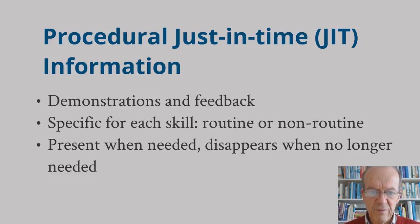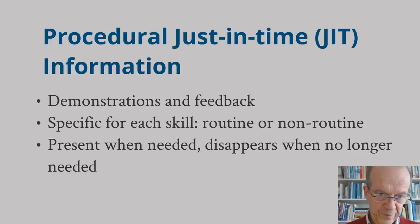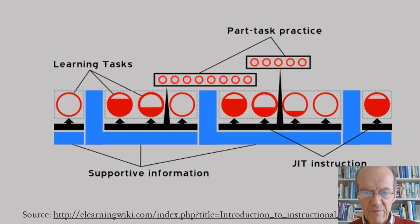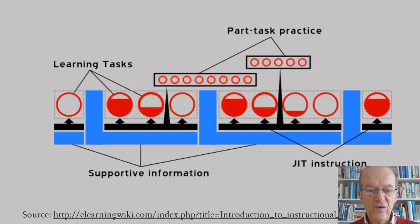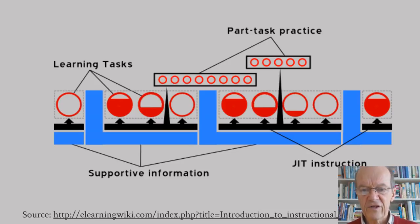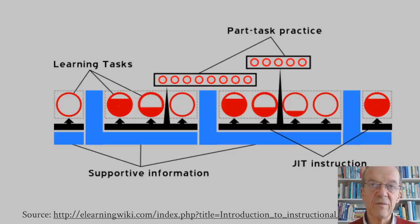Just-in-time procedural information is present when needed and disappears when no longer needed — that's the JIT principle. With these four components, instructional sequences can be arranged in which all components have a place. The different learning tasks are each provided with a certain amount of scaffolding. Supportive information is depicted as blue bars and just-in-time instruction as black bars. Tasks are sequenced and may consist of part-task practice sessions where mastery of a complete task is gradually built up.